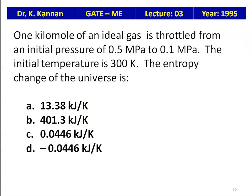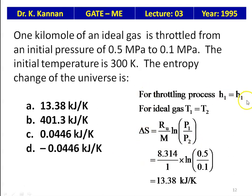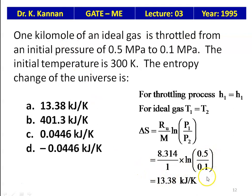One kilomole of ideal gas is throttled from 0.5 MPa to 0.1 MPa. The initial temperature is 300 K. For a throttling process H1 = H2; for an ideal gas T1 = T2. The entropy change ΔS = R·ln(P1/P2) = (Ru/M)·ln(P1/P2) = 8.314 × ln(0.5/0.1) = 13.38 kJ/K. The answer is 13.38 kJ/K.